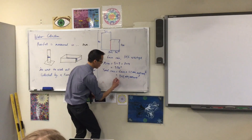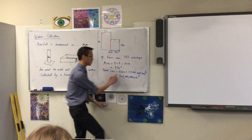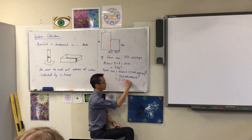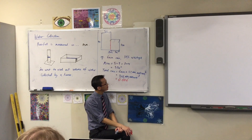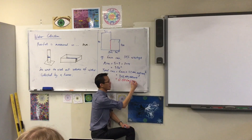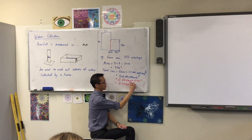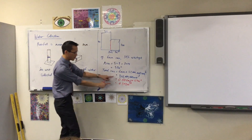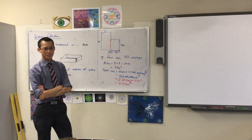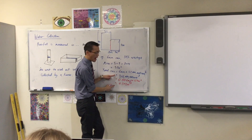Instead of converting the area to millimeters, let's convert 6 millimeters into meters. Moving the decimal three places gives 0.006 meters. Now multiplying that by 57 meters squared gives 0.342 cubic meters. Both approaches give the same answer — it's just a difference of units — but 0.342 is much easier to convert into milliliters or liters than 342 million cubic millimeters.